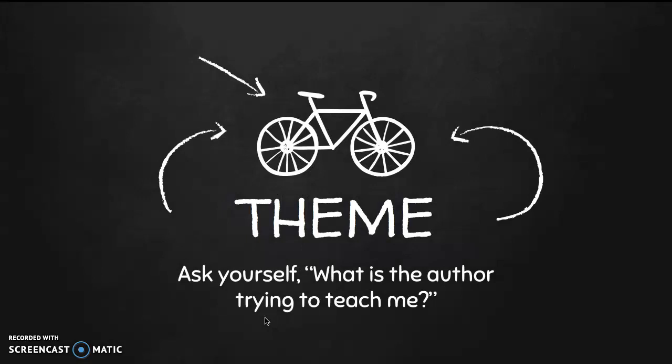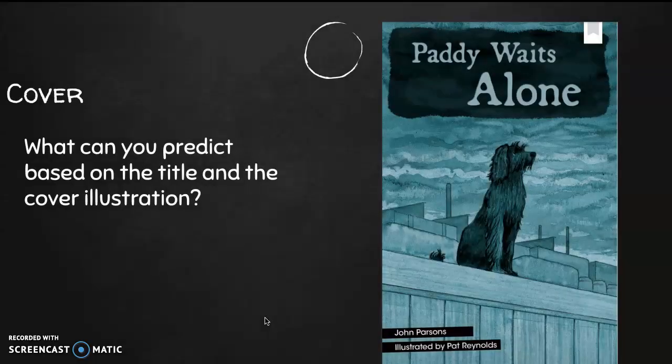As we read, remember our focus is theme and we're going to ask ourselves: what is the author trying to teach me? Let's get started. When I look at the cover, I want to think about what I can predict based on the title and the illustration. The title is 'Patty Waits Alone' — it sounds like this dog is going to be waiting for something by himself. The illustration looks very dreary and gray, and it looks like he's somewhere industrial, not at a park or a house where I might think of finding a dog.